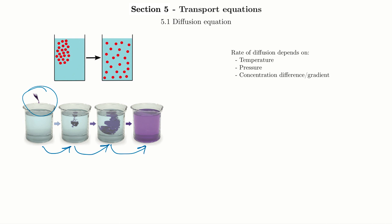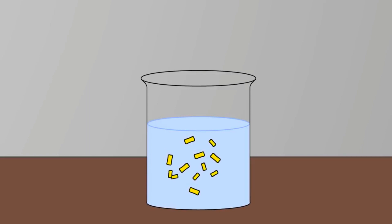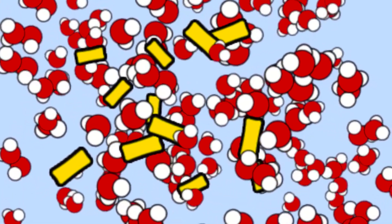The rate of diffusion depends on a few things: temperature, pressure, and the concentration gradient. There's a link to a video on Brownian motion in the caption — a simple tutorial. Brownian motion is named after Brown, who first observed pollen suspended in a liquid appearing to jiggle around. That was the first visualization of Brownian motion, because the pollen is bumping into nearby water molecules. You can see the pollen, whereas you can't see the water molecules moving.